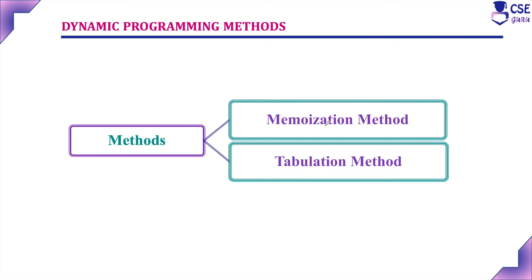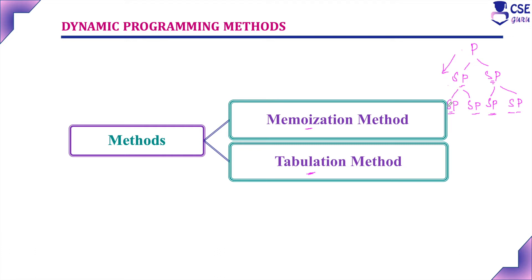The two main methods used in dynamic programming are the memoization method and the tabulation method. The memoization method stores the results of similar subproblems in a memory location. The problem is divided into subproblems, those into further subproblems if possible, and solutions are stored in memory. Whenever similar subproblems are encountered, the result is reused from memory instead of recomputing. This memoization method solves from the top — it is otherwise called the top-down approach.